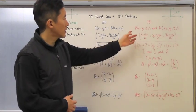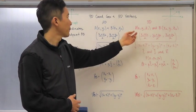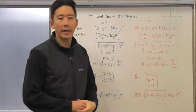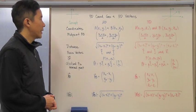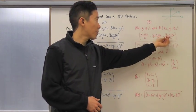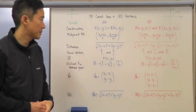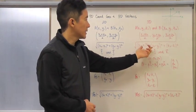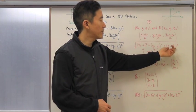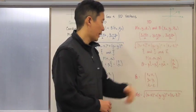Point A is exactly the same as the 2D case except we also include z₁, and B also includes z₂. The midpoint formula is exactly the same except you add one more part — the average of the z coordinate values. For distance it is the same thing as well: take the difference between the z values, square it, and add it to what we had before.